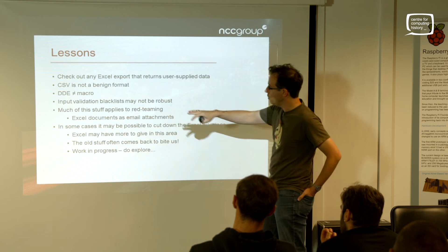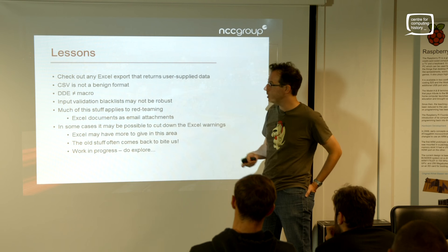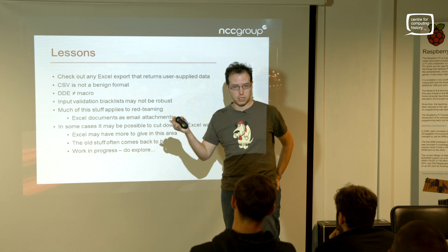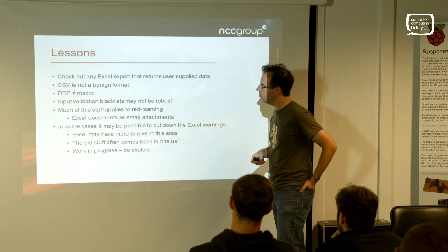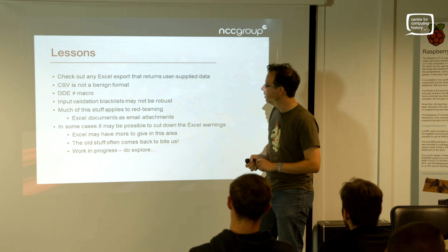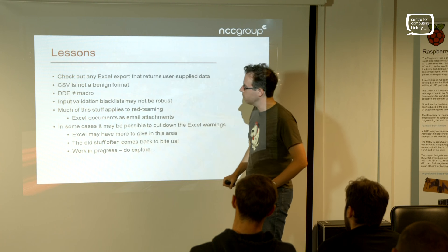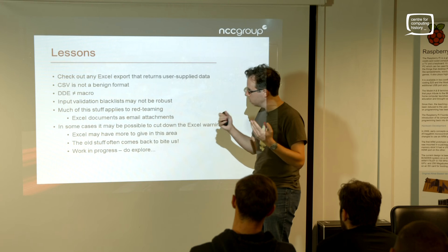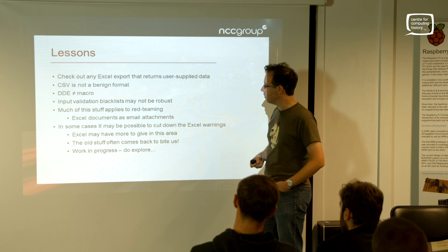What are the lessons here? If you see Excel export, dig in - it's certainly new to some people even though it's a couple of years old, and I've had emails asking for the payload again. CSV is not a benign format - you can have fun with a CSV. DDE is not a macro, so even if people are protecting themselves by disabling macros, you may still be able to get round that. Blacklists may not be robust - as we've seen, you might be able to bypass them.